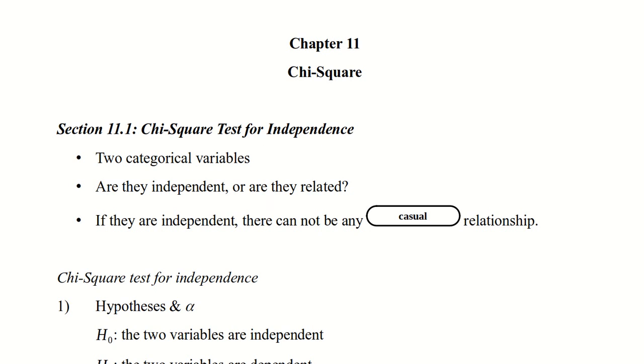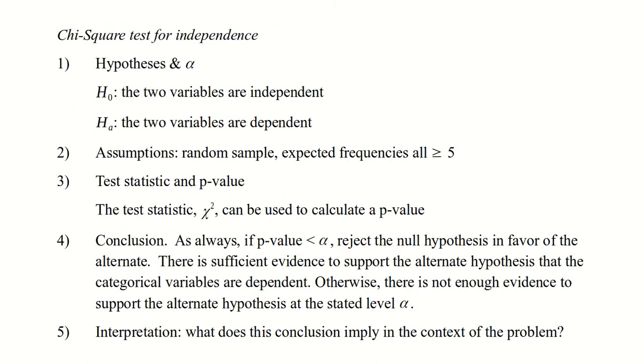For a chi-squared test for independence, we first state the hypotheses and the level of significance. The null hypothesis is that the two variables are independent, and the alternative hypothesis is that the two variables are in some way dependent. Our assumptions are that we've got a random sample and that we've got at least five of all of our observations. The test statistic and the p-value come in step three. The test statistic is chi-squared, and it is used to calculate our p-value.